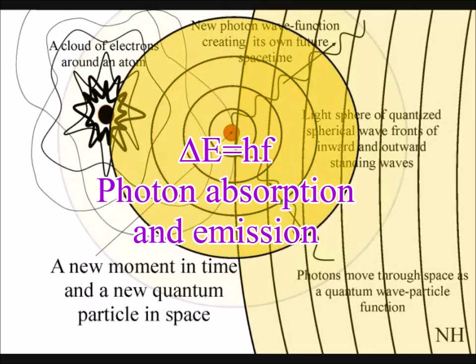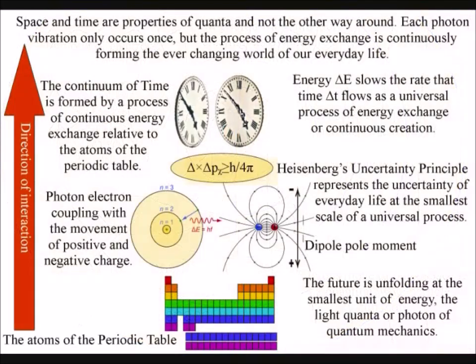The atoms of the periodic table are standing waves in time with the wave-particle duality of light and electrons as waves over a period of time with particle characteristics as the future unfolds with each photon-electron interaction.